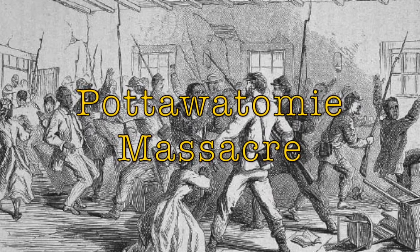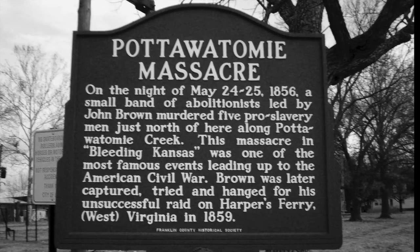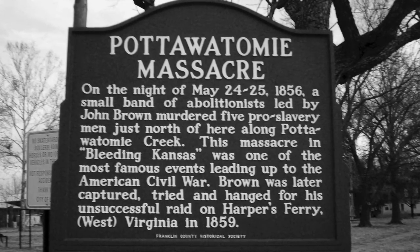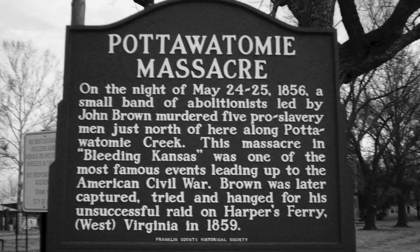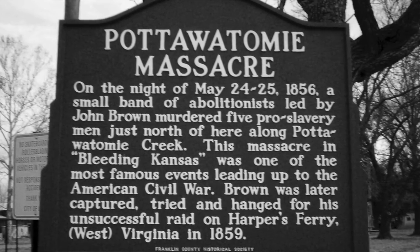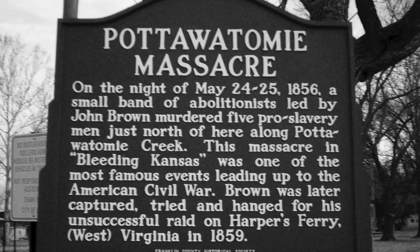On May 21, 1856, pro-slavery forces led by Samuel Jefferson Jones attacked and ransacked Lawrence, Kansas. Lawrence, Kansas had been founded by anti-slavery settlers from Massachusetts who were hoping to make Kansas a free state. On May 24, 1856, John Brown, an anti-slavery man, was stimulated by the sacking of Lawrence. He led abolitionists, including five of his sons and three others, killing five pro-slavery settlers in Pottawatomie Creek, Franklin County, Kansas.